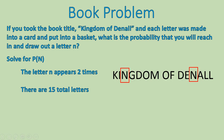There are a total of 15 letters. 1, 2, 3, 4, 5, 6, 7, 8, 9, 10, 11, 12, 13, 14, and 15. So that's the probability then. The probability of drawing out the letter N, if each letter was drawn out at random, is 2 out of 15. And that's how we would solve this with the book title, Kingdom of Dinelle.